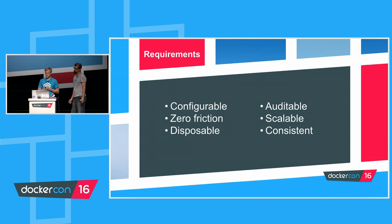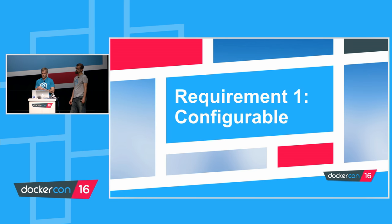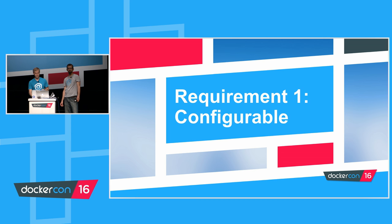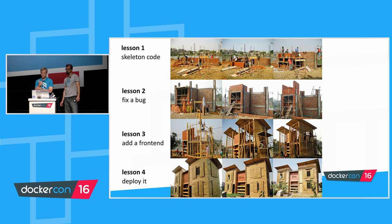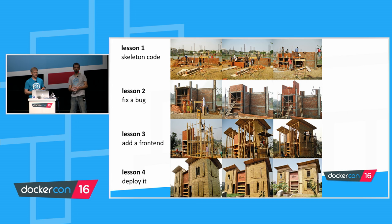Let's talk about the requirements and constraints around the system. The system needs to be configurable — we have many small labs with different variations that should be created easily. A given course might have four labs, each showing a different state of the software. For example, lesson one gives skeleton code as a starting point, lesson two starts a container with a particular bug the user can fix, then move on. Lessons three and four follow the same rhythm — maybe adding a front end to a back end API, or deploying code in a production scenario. We need to snapshot the environment at different stages of development and let the student pop in at any stage.